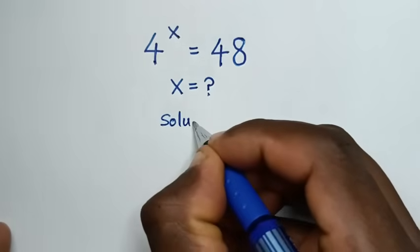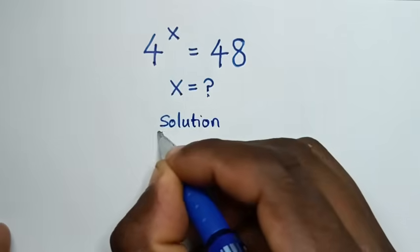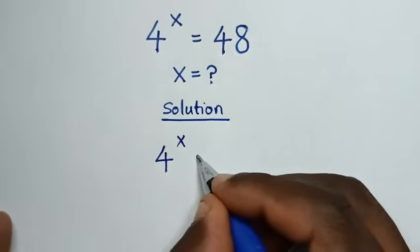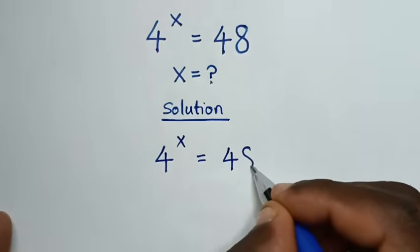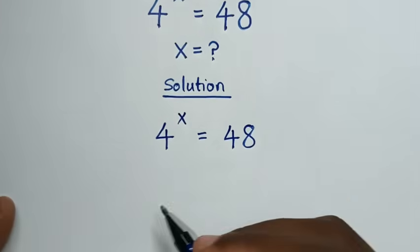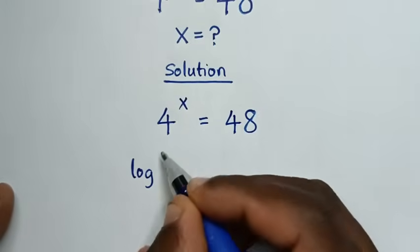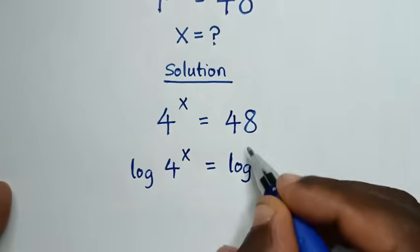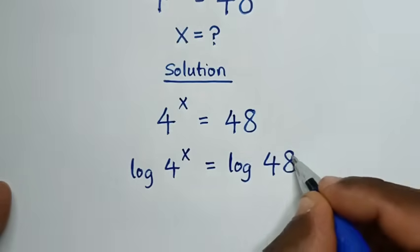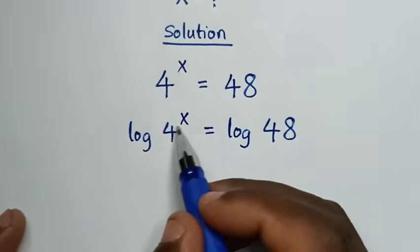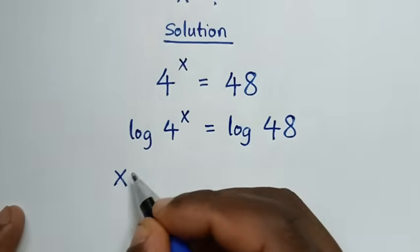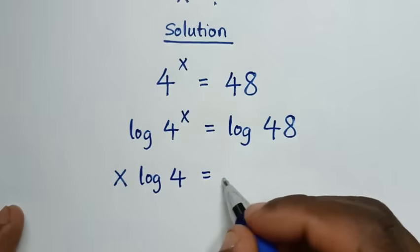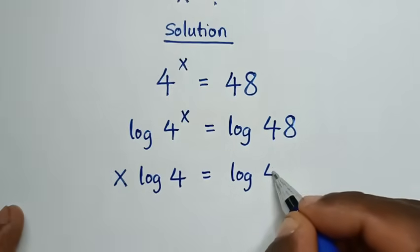Now solution. From our problem, which is 4 power x is equal to 48, in the first step we'll apply log on both sides, so it will be log of 4 power x is equal to log of 48. Then this power of x will move to the base, so it will be x log of 4 is equal to log of 48.